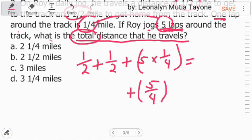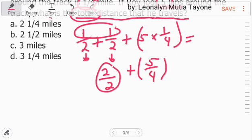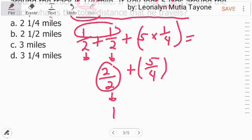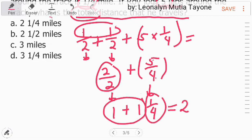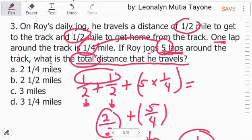So, 5 times 1 fourth and that is 5 over 4. So, itong 1 half na ito, that is equivalent to 1 because this is, i-kopyahin mo lang yung 2. So, 1 plus 1 equals 2. So, 2 over 2. Ang 2 over 2 ay equivalent ng 1. Okay? So, ang i-add natin ay itong 5 over 4. 5 over 4, convert natin into mixed numbers. And that is 1 and 1 fourth. So, i-add mo lang yung mga whole numbers and that is 2 at si fraction na 1 fourth. Ang sagot dito ay 2 and 1 fourth. Letter A.